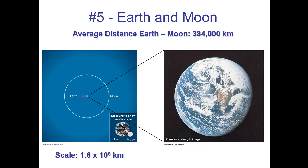We've expanded another two orders of magnitude. We were at 1.6 times 10 to the fourth; now we increment the index by two to get 1.6 times 10 to the sixth — that's 1.6 million kilometers. When we make that jump, we can now fit the Earth-Moon orbit into this picture. It gives the impression that the moon is somewhat close to the Earth, because it only required one jump to see the moon once we saw the entire Earth.